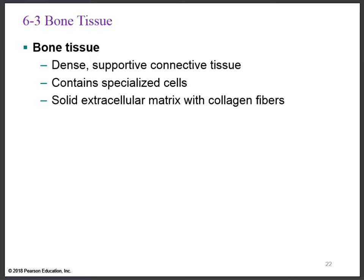Bone tissue has a matrix that is solid. If you tap on the outside of your elbow and feel the bones that make up your elbow, those bones are solid. They also have collagen fibers, which keep the bone flexible so our bones don't shatter.